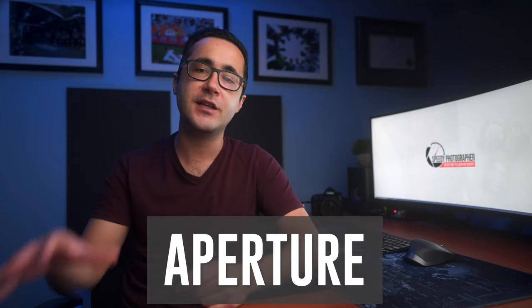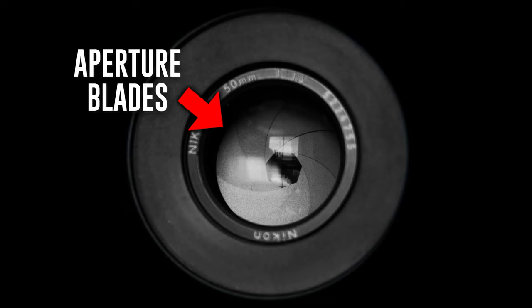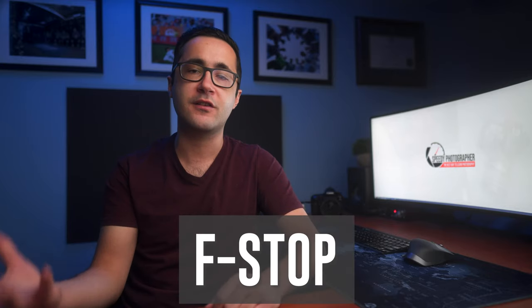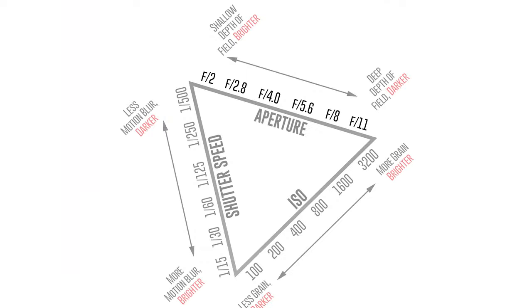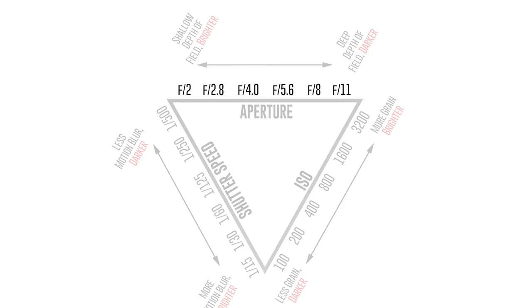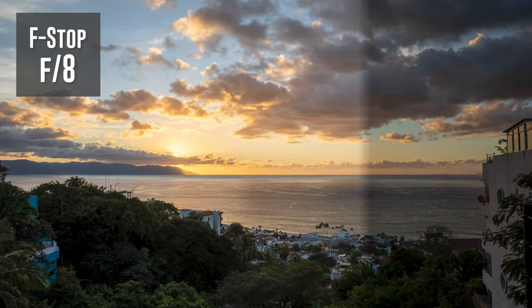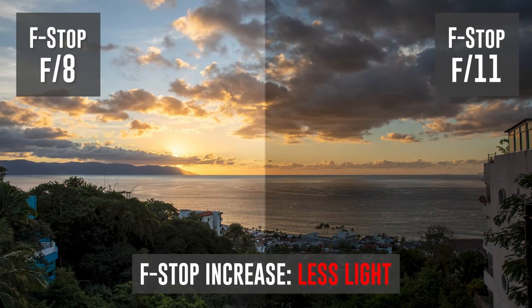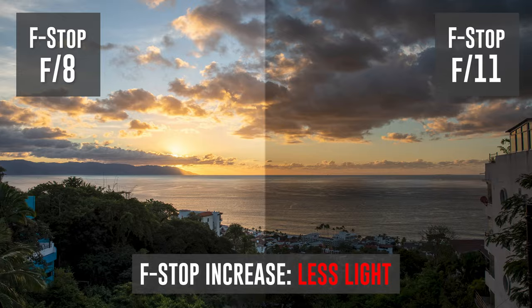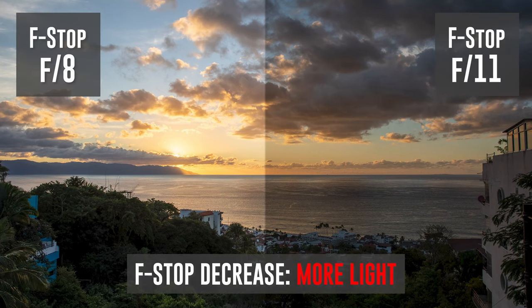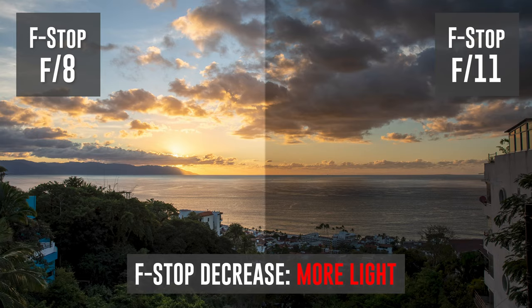Next we have aperture. This setting controls how much light passes through a set of blades inside your lens. Aperture is measured using a number referred to as the f-stop. When you look at the exposure triangle, you'll see a bunch of numbers representing f-stop that look kind of meaningless — and that's because they are. All you need to know is this: increasing your f-stop will decrease your exposure, because the blades inside your lens become narrow and let less light through. Decreasing your f-stop will increase your exposure, because the blades open wide and let more light through.